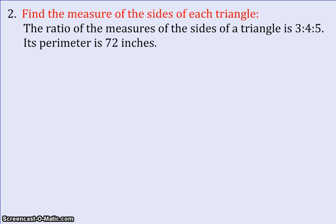This particular problem says the ratio of the measures of the sides of a triangle is 3 to 4 to 5. Its perimeter is 72 inches and it wants you to find the measure of the sides of the triangle.